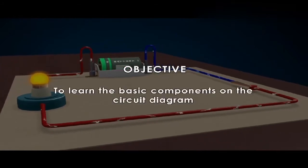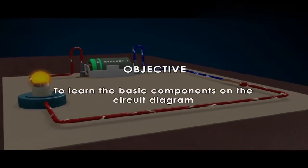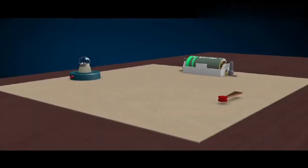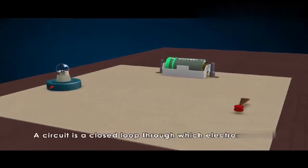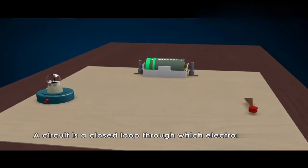To learn the basic components on the circuit diagram, a circuit is a closed loop through which electrons travel.